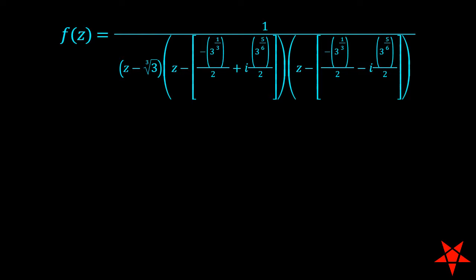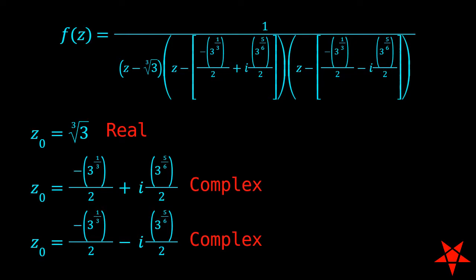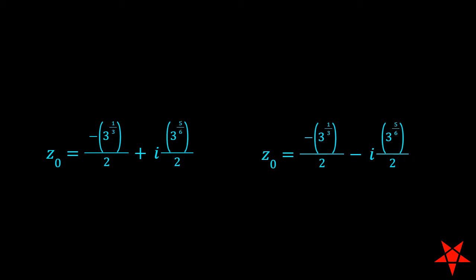At this point, it is clear that f of z has three distinct singular points in the complex plane. One is located on the positive real axis, while the other two have both real and imaginary components. Each singular point forms a first-order pole at its location. In order to make these latter two points easier to visualize, we will factor out their magnitudes. Since the only difference in the value of these points is a minus sign on the imaginary component, their magnitudes are the same.